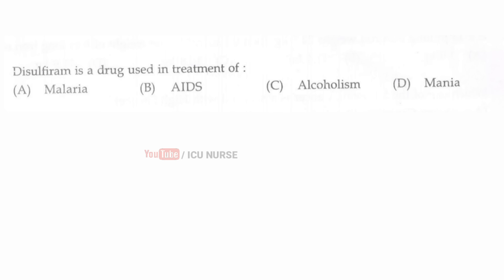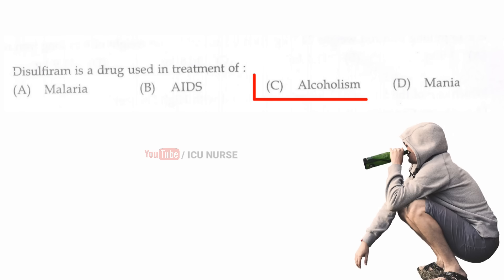Disulfiram is a drug used in treatment of — the correct answer is C — alcoholism.